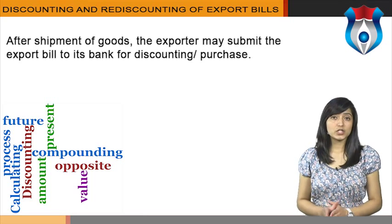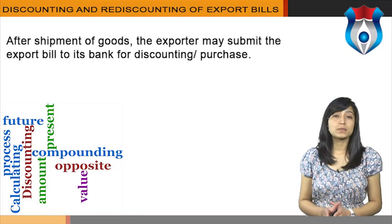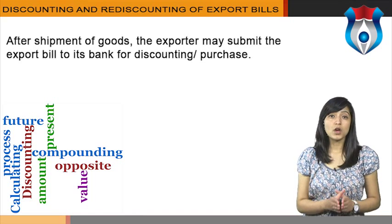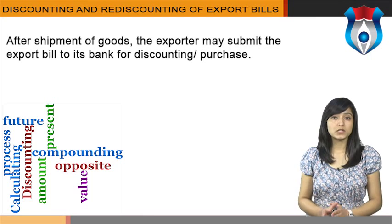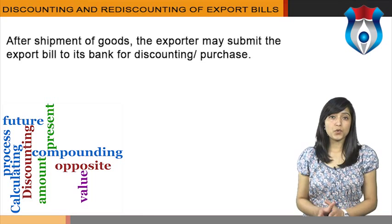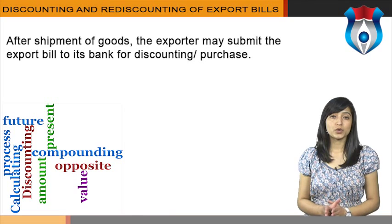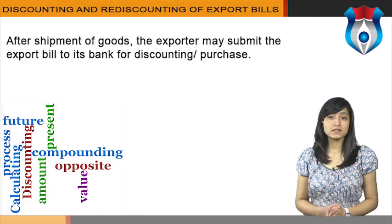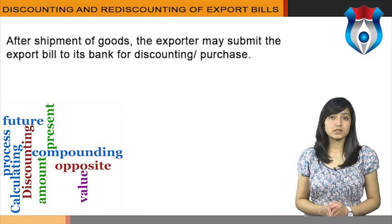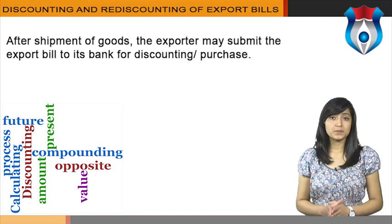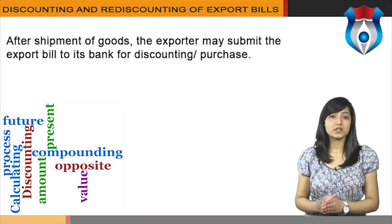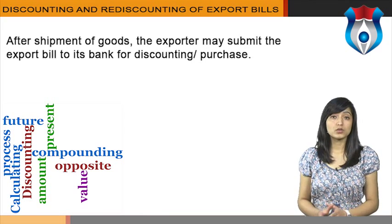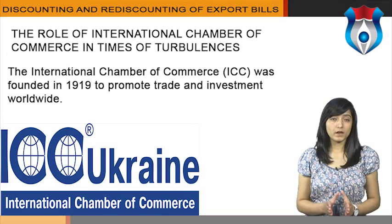The bank normally does not ask for any collateral. In such cases where the discounting facility is given bill-wise — that is, a limit is not sanctioned — it is the pure discretion of the bank whether to allow discounting of a particular bill or not. Here it is important that the client must have a good credit history and good relations with the bank. The bank has a charge on the current assets of the organization. It depends basically on the requirement of the exporter, relation with the bank, track record, good repayment history, and good market reputation.